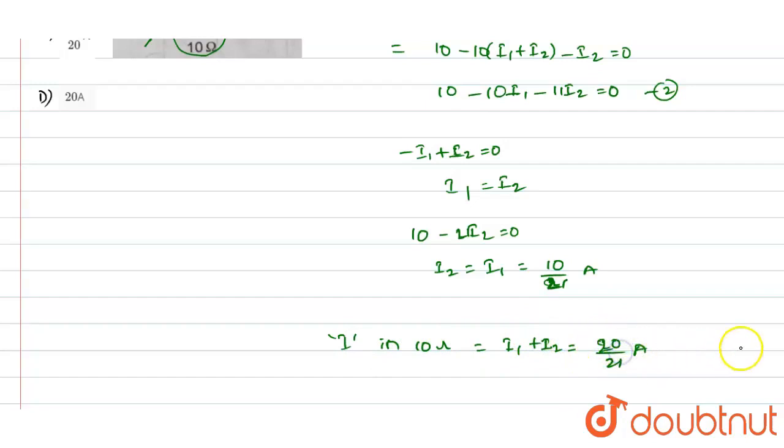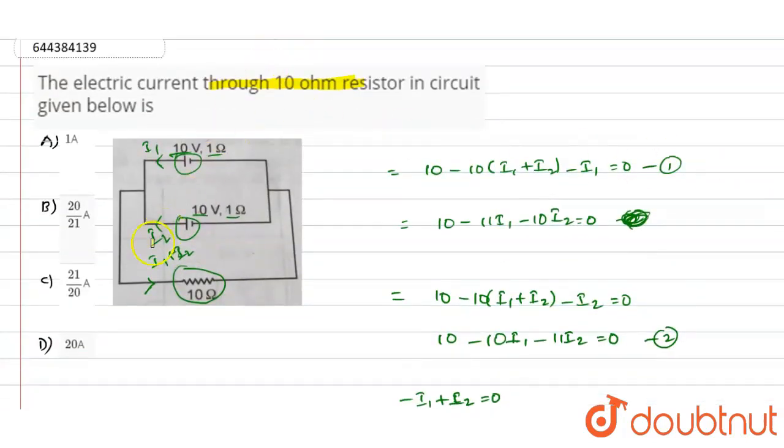Out of these four options if you see option B we have 20 divided by 21 amps, so option B is the correct answer for this question. Thank you.